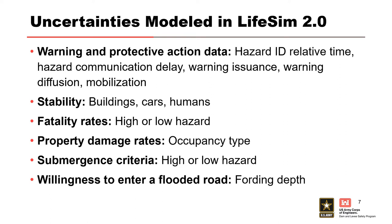Stability was discussed extensively yesterday, so I won't go too deep into that. Fatality rates also have significant variability — we've had case studies where people did really well in bad situations and really poorly in not-so-bad situations. Property damage rates and occupancy types are a knowledge uncertainty: if I'm assuming 80% of 100,000 structures are residential but don't really know, I can verify that on Google Earth. Submergence criteria hinges a lot on the limited mobility factor — natural variability, since someone with a recent knee injury can't always climb to a second story.